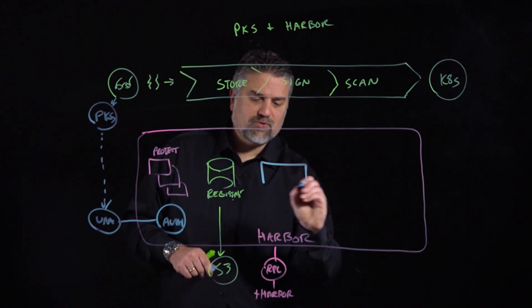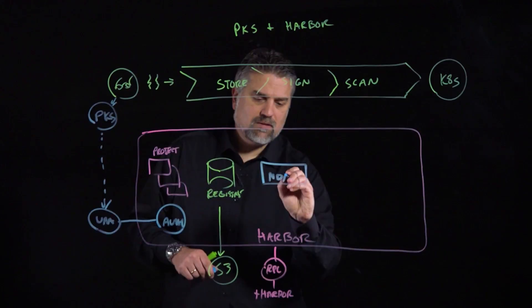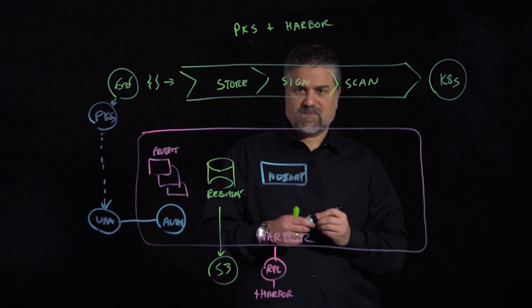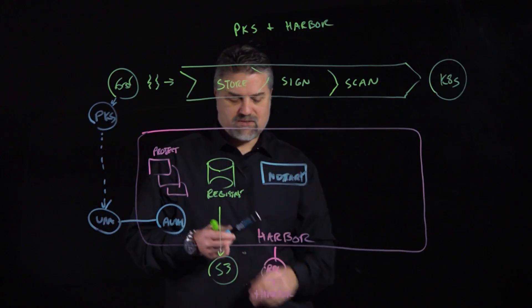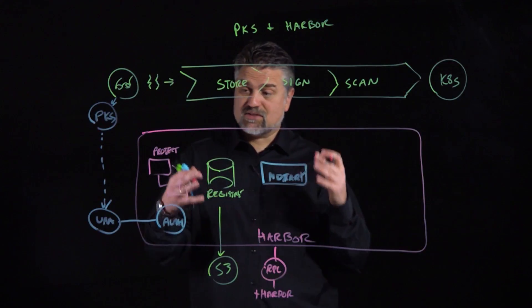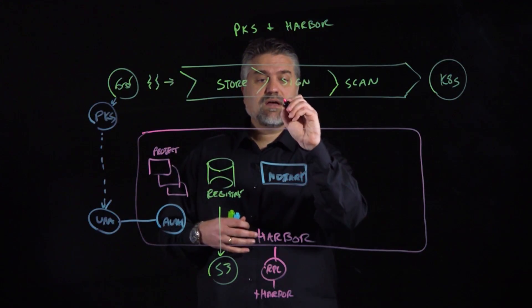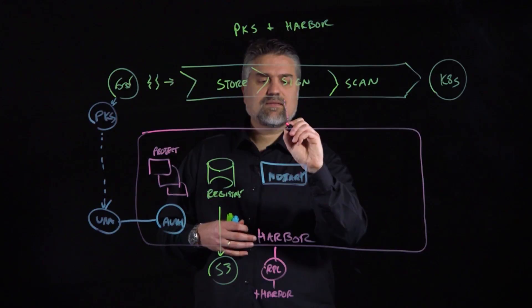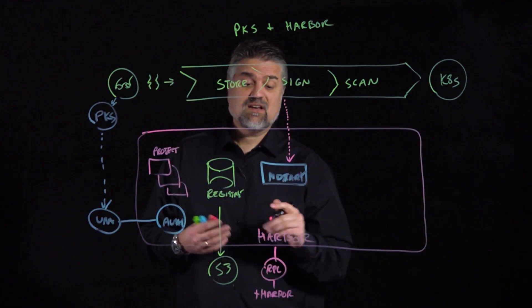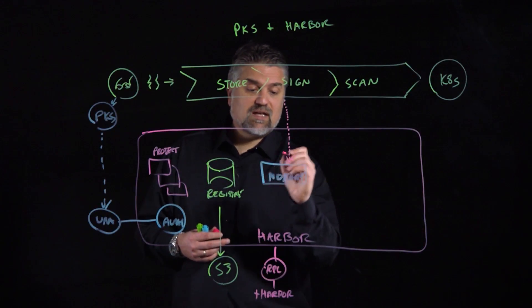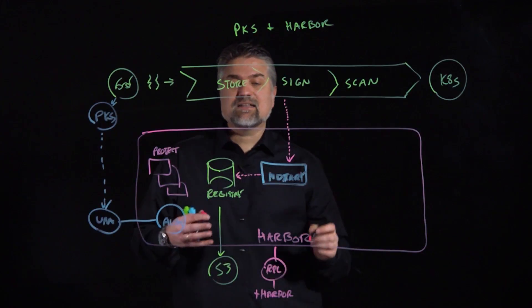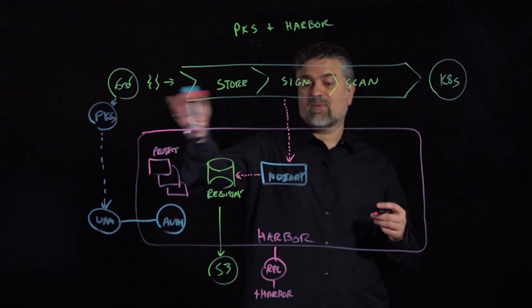And what Notary will allow us to do is when we're ready to store and sign, we can kind of do this in one action. We can generate some certificate keys and sign this image from a known entity that's been registered with our Notary Service. So, via Notary and the registry backend, we can actually get a secure signed image so we know who built the image from our pipeline into Harbor.